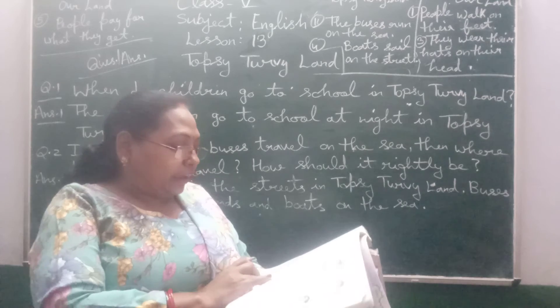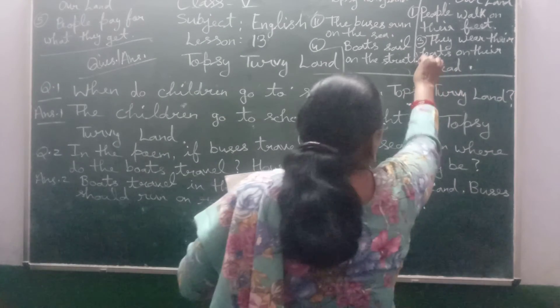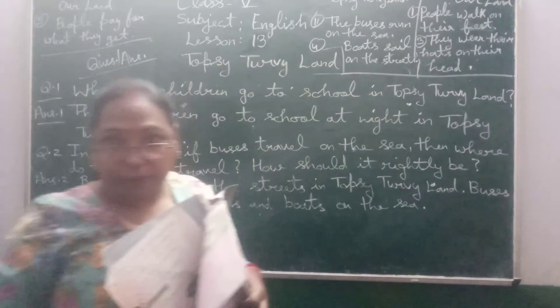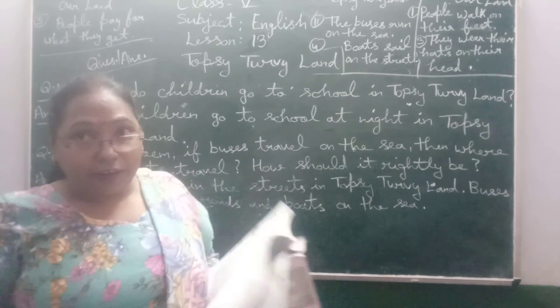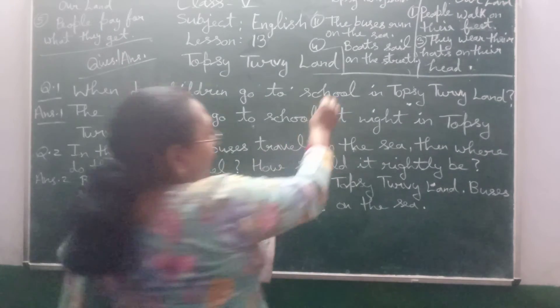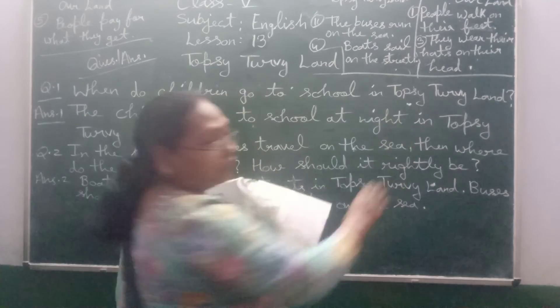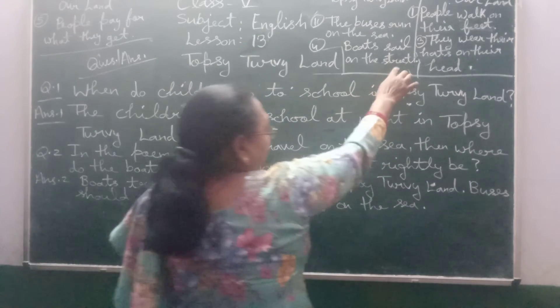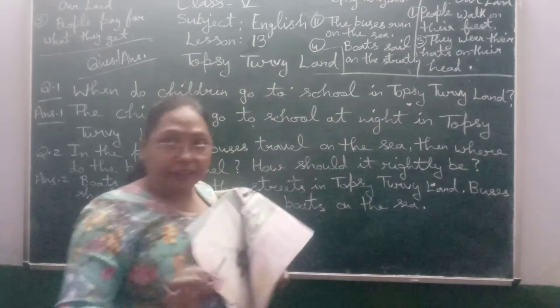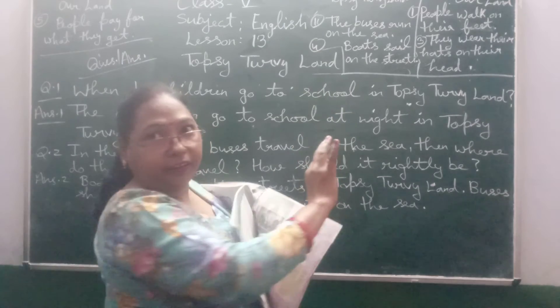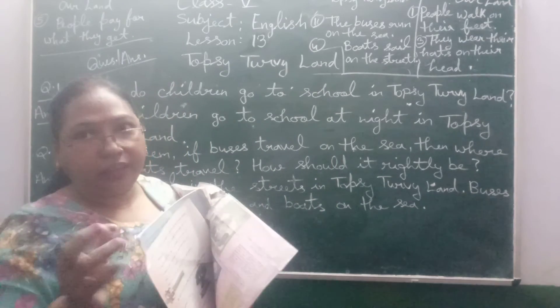Boards or boats stay in the sea in our land — that is where they go. But in Topsy Turvy Land, boards stay on the streets. So in Topsy Turvy Land, boats travel on the streets, while in our land they travel on the sea.